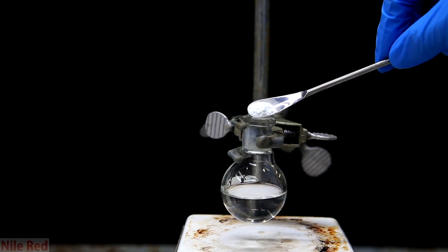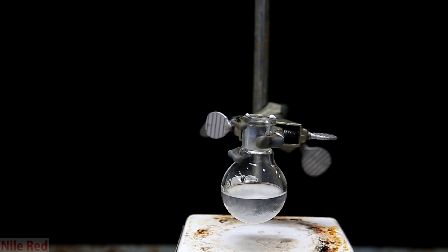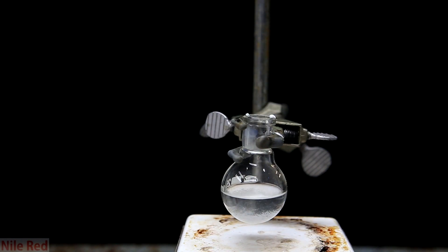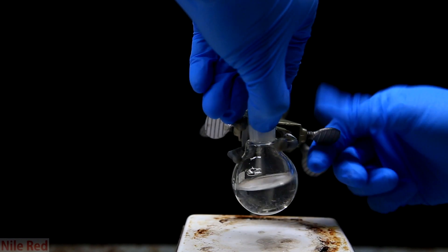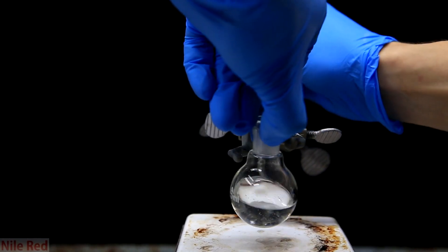To really dry and pull out the last little bit of water, we add a little bit of magnesium sulfate. We swirl it around over the magnesium sulfate until we see that it's dry.